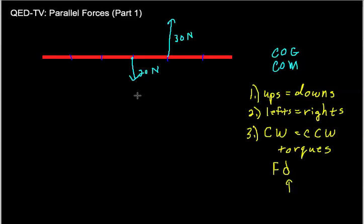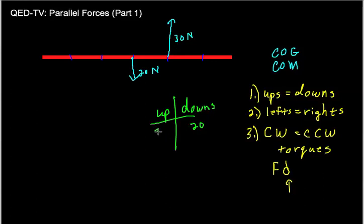So we want to figure out: where should I put a force, what is its magnitude, should it go up or down, and where should it be applied so this thing will not rotate? Starting with rule number one — ups equal downs — I'll make a T-chart. In the down column I have 20 newtons, and in the up column I have 30 newtons. Since the up column is greater, I need 10 newtons down to balance it. So I know the force is 10 newtons going downward. Now the key question is: where should I put it?